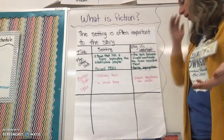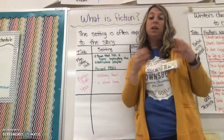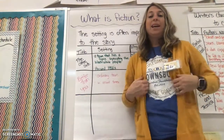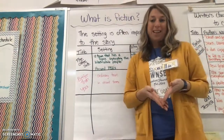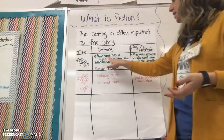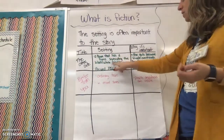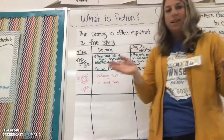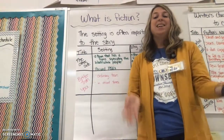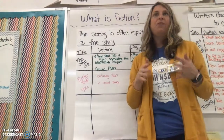So let's look at a couple of stories that we've read. We've read the book The Other Side — remember that was the book about the black girl and the little white girl, and they had a fence that divided them down the middle. The setting of that story was a town that has a fence that separated the black people from the white people, where they could not be in certain spots. And it took place around the 1950s.